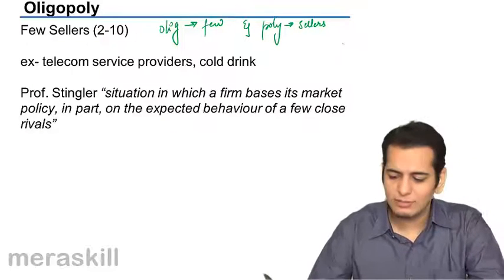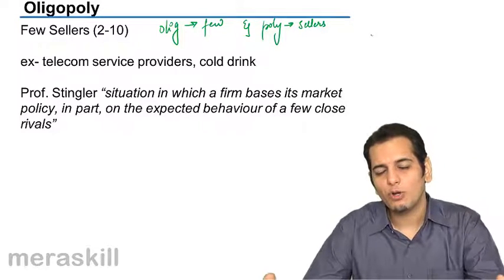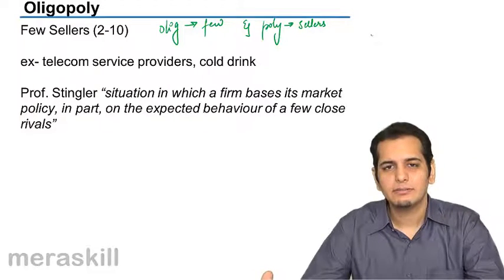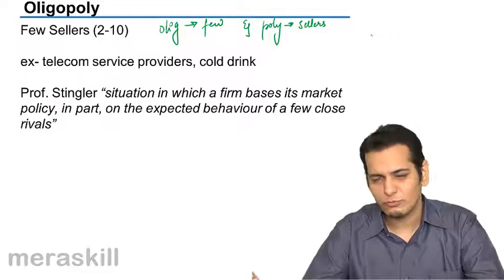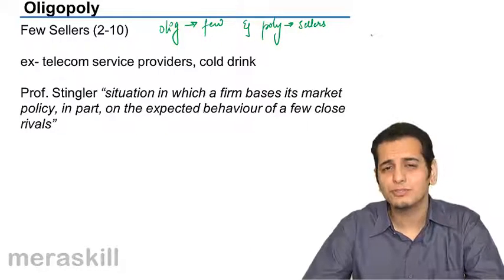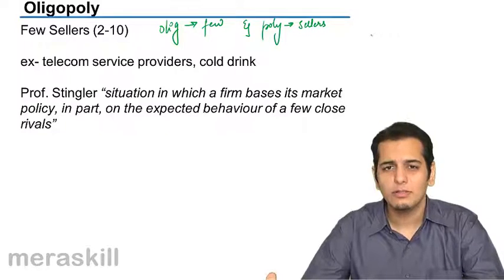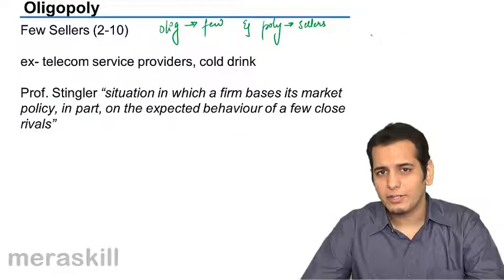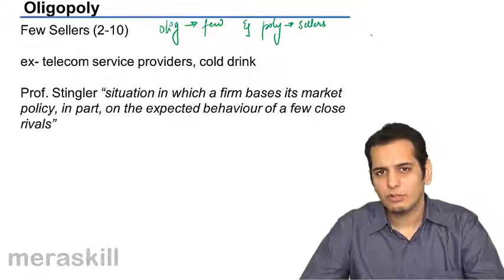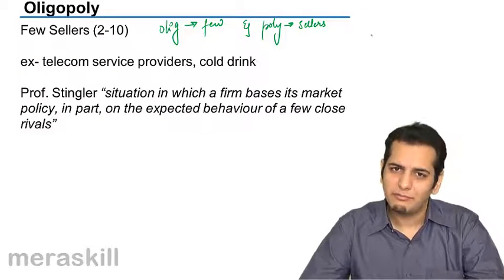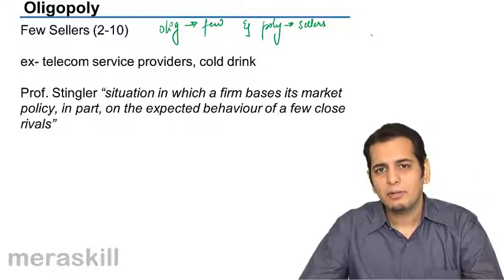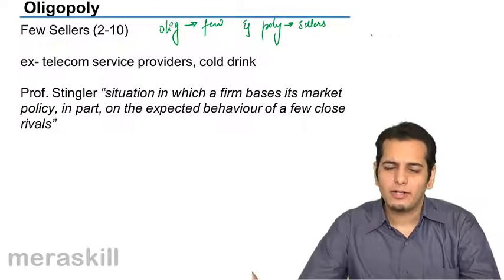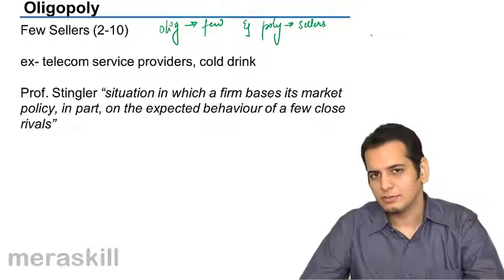Now 'few sellers' — if you want to quantify it, would be around two to ten or twelve sellers in the market. Generally we should not be putting a number to it, but just for our convenience we can say in that market there are two to ten or twelve sellers.